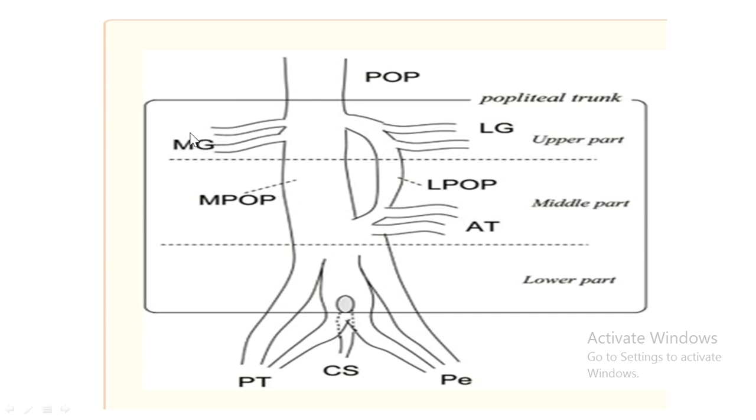In the upper third, you have the veins coming from the medial gastrocnemius and those coming from the lateral gastrocnemius which join the lateral trunk. Together they form the popliteal vein.